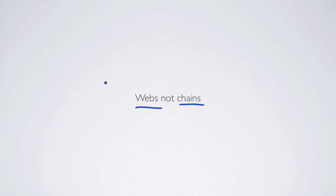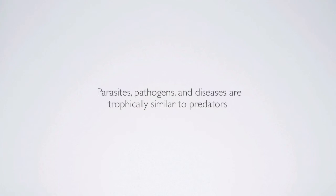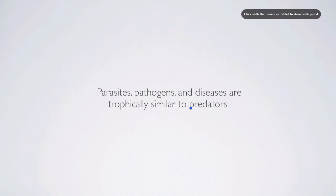We haven't talked about these, but there are parasites, pathogens, and diseases that are trophically similar to predators in many respects but are hard to classify. They also show the example of some of the symbioses that are there — thinking about mycorrhizal fungi and how hard it is to classify them and where you would put them directly in a plant-based or detritus-based trophic chain.